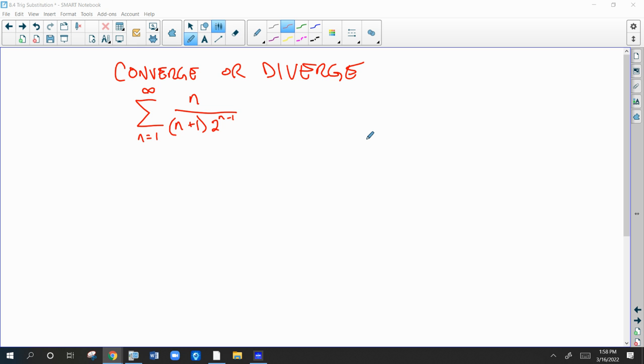And if you just look at part of the series, n over n plus 1, then if you took the limit as n goes to infinity of n over n plus 1, we know that's 1. So that's a pretty simple limit to do.